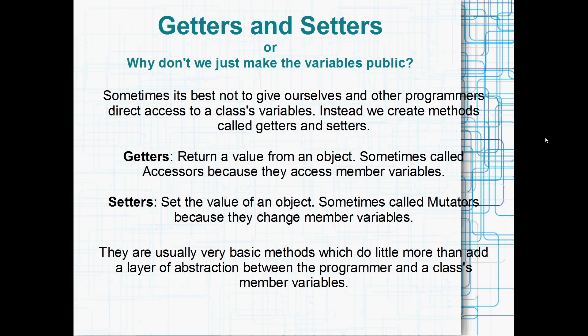Getters and setters is what we're talking about today. Sometimes it's best not to give ourselves and other programmers direct access to a class's variables, and what we do instead is create these methods called getters and setters. A getter method returns some value from an object — sometimes called accessors — and setters set the value of an object — sometimes called mutators. They're often very basic methods which add a layer of abstraction between the programmer and the class's member variables. What's important is not so much what they are, but why they're useful and how to use them.